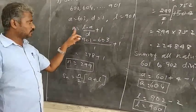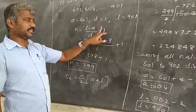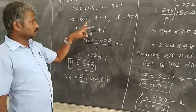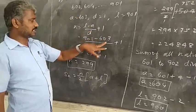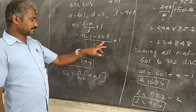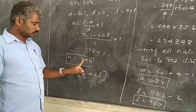Number of terms n equals L minus A by D plus 1. So L value 901 minus A value 603 by 1 plus 1. Subtracting: 298 plus 1 equals 299.